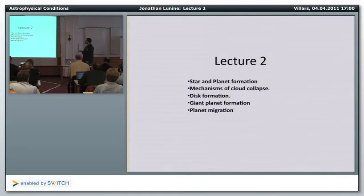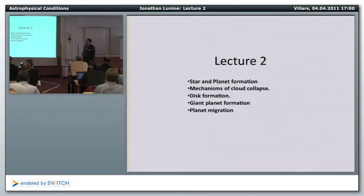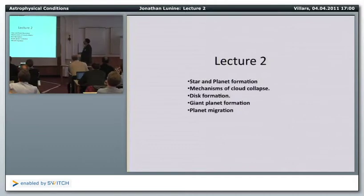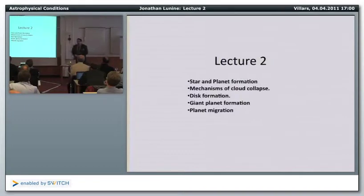I'll make some general considerations about star and planet formation, then talk briefly about mechanisms of cloud collapse — mainly because it's interesting for one possible mechanism of giant planet formation. Then I'll discuss properties of disks, get into giant planet formation, planet migration, and close with an alternative way of dating the age of Saturn.